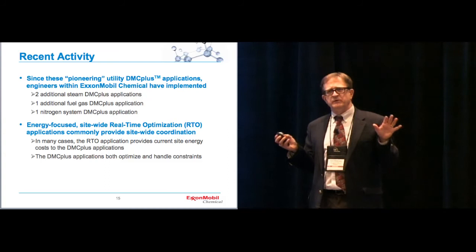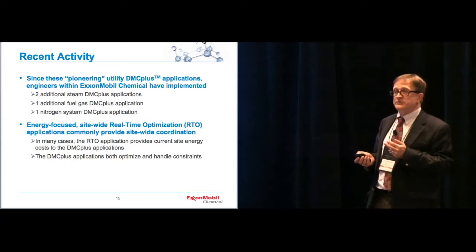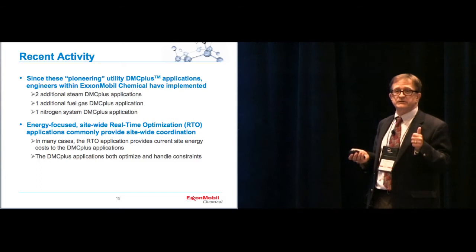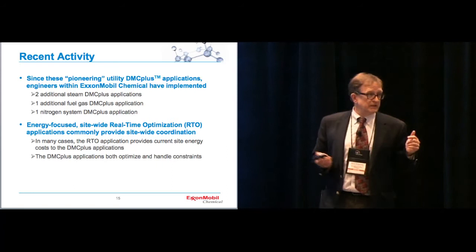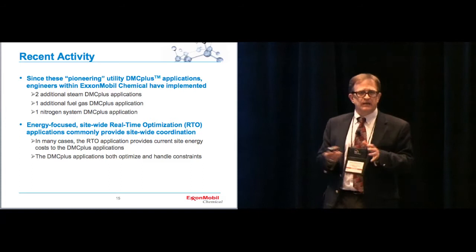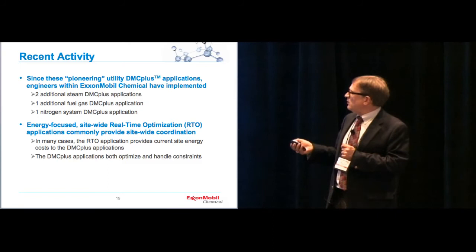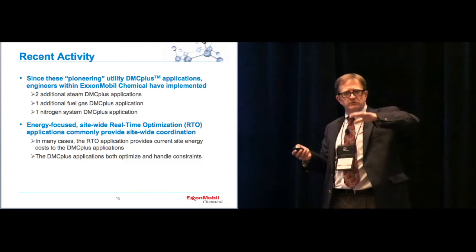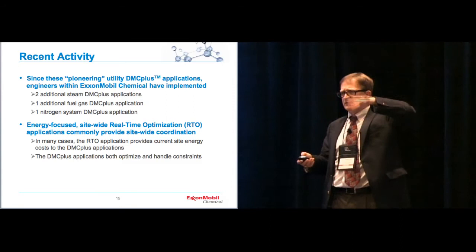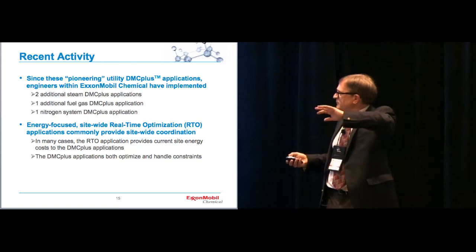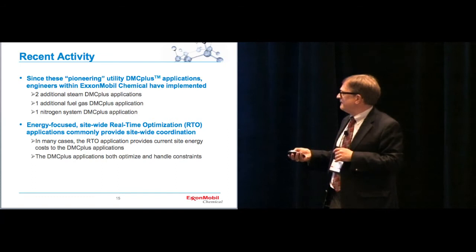Since that time, again, that was the first two utilities DMCs that we've done. Since that time, we've done a whole lot more. We've done two more steam systems at a couple different sites. We've done one additional fuel gas DMC application at a large integrated site, and oddly enough, recently a nitrogen system. That one, unfortunately, doesn't save any energy, but it was a neat application showing how you can actually push this into a lot of different utilities applications. What's neat is that when we link these to the energy site-wide energy RTO applications that we're doing now at a lot of our sites, which provide utilities, I mean, we're talking about electricity as well as overall steam management as well as fuel gas management, we can get economics from that, and then we actually use those economics to drive the DMC Plus controllers.